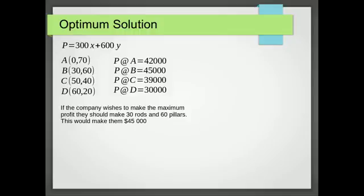Okay, so now we use those values at the vertices of our region to find the various values of the objective function. And I've worked those out before. And you can see that the highest value is at B. And we get that by doing 300 times 30, the x value, plus 600 times 60, the y value. And we get 45,000. So that's obviously the optimum solution.